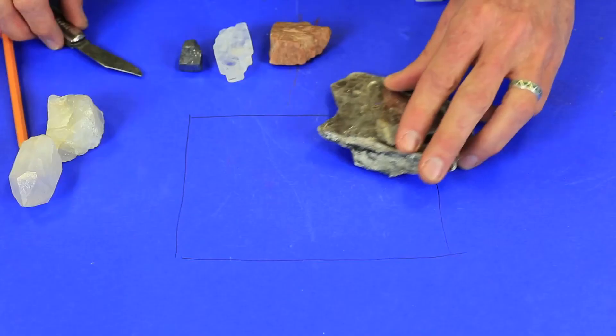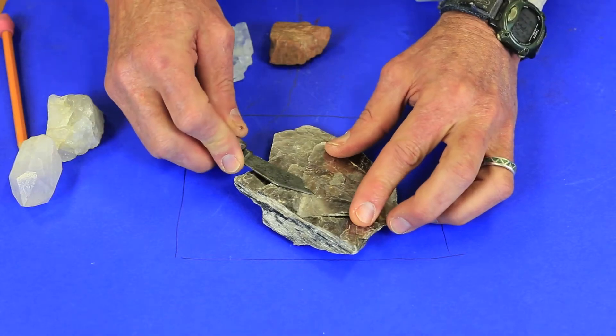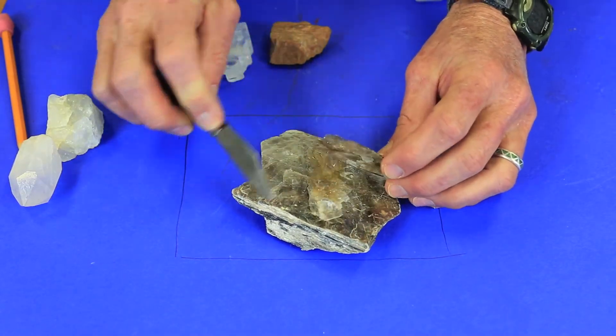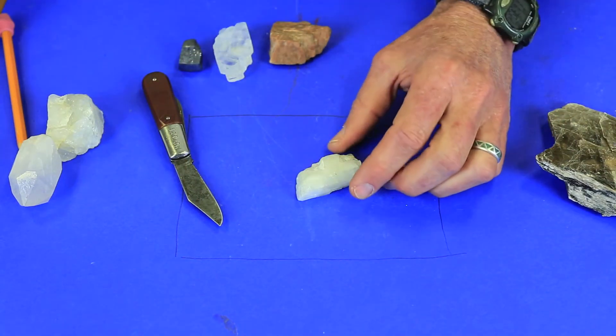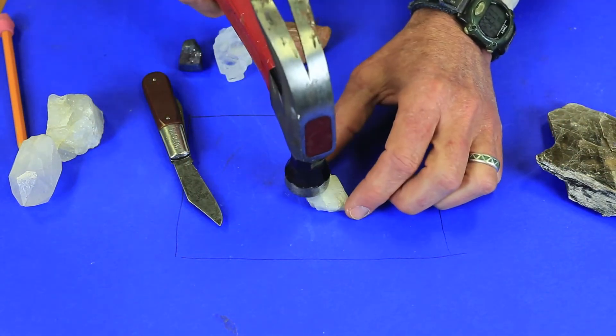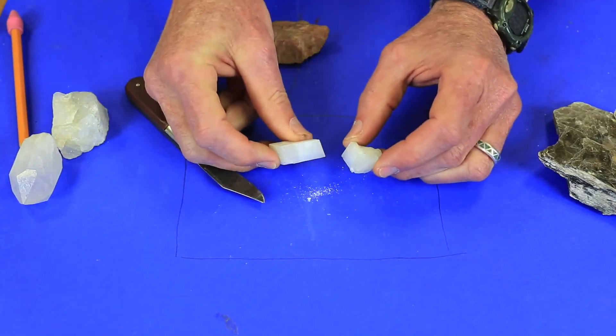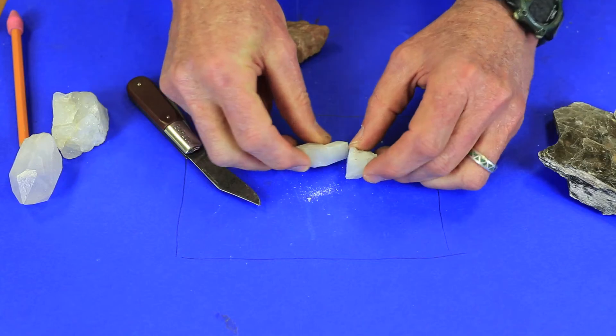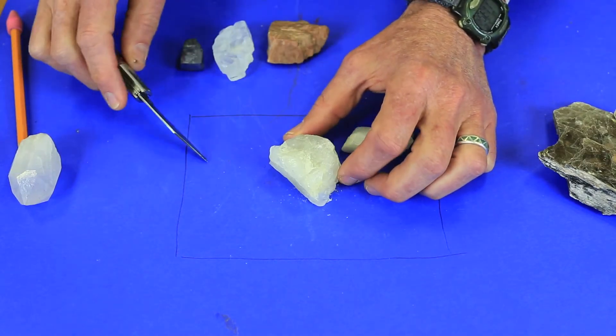Another physical property that you will be looking at is the property of cleavage. Now cleavage is the tendency of a mineral to break along a preferred plane of weakness that's set up by the bonding types and the atoms that are in the molecular formula. Not all minerals have cleavage. Some minerals they'll still break but they simply break along an uneven surface that we call fracture. So your mineral will either have cleavage or fracture.